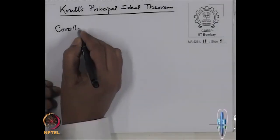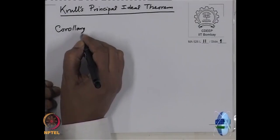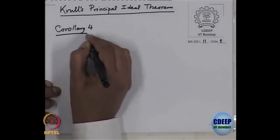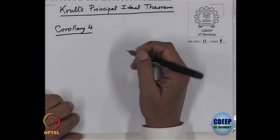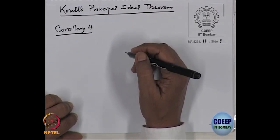We have already deduced corollaries 1, 2, 3. Today is corollary 4. Remember, the dimension theorem is for a Noetherian local ring, where three definitions of dimension are equal: one is the supremum definition, the other is the degree of the Hilbert–Samuel polynomial, and the third is the Chevalley dimension.